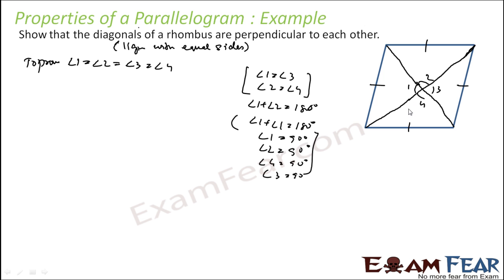So let's name the vertices A, B, C, D. To prove angle 1 = angle 2, let's take two triangles: triangle AOD and triangle COD.